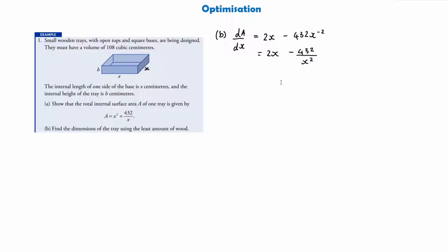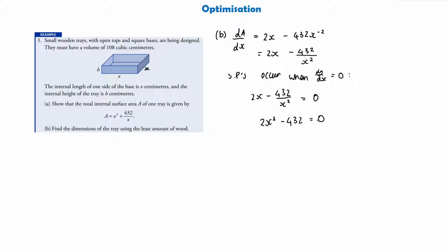Stationary points occur when dA/dx = 0, so we set 2x − 432/x² = 0. Multiplying everything through by x² gives 2x³ − 432 = 0. Dividing by 2 gives x³ − 216 = 0, so x³ = 216, and therefore x = ∛216 = 6.